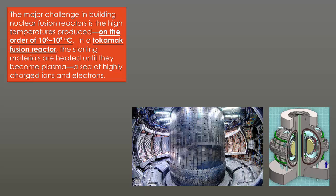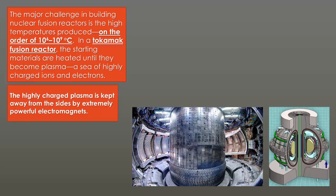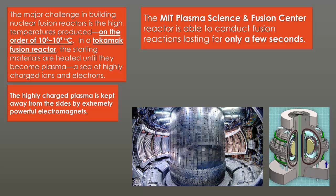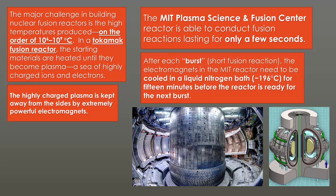In a tokamak fusion reactor, the starting materials are heated until they become plasma, a sea of highly charged ions and electrons. The highly charged plasma is kept away from the sides by extremely powerful electromagnets. At MIT, they have a plasma science and fusion center, and they actually have a reactor that can conduct these fusion reactions for only a few seconds. Because the machine gets to billions of degrees hot, they have to use liquid nitrogen, which is negative 196 degrees Celsius, and they have to cool the reactor until it's ready for the next possible burst. It's difficult because this reaction gets very, very hot, and it's really hard to cool it down.